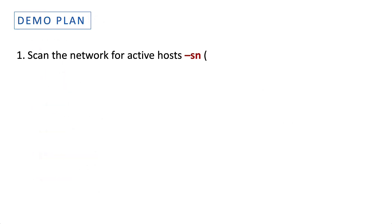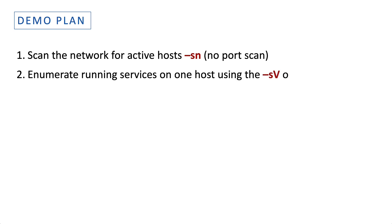This is our demo plan. Number one: we will perform a fast scan of the network just to discover active hosts using the -sn option, which skips the port scan. Number two: we will enumerate running services on one of the hosts using the -sV option.